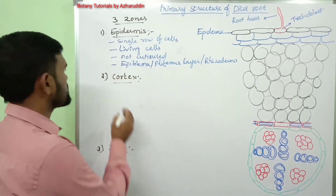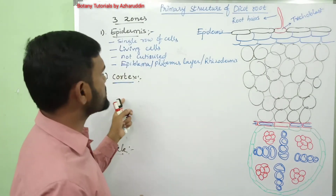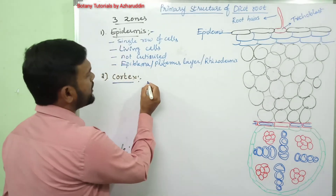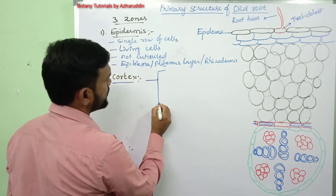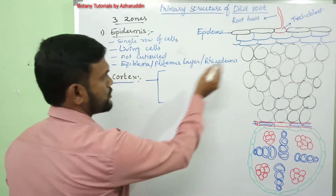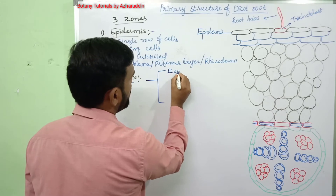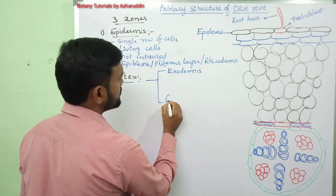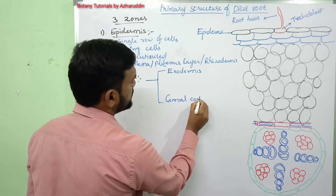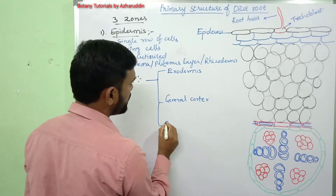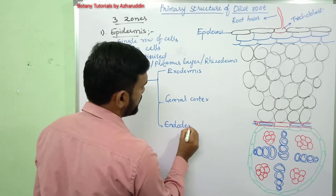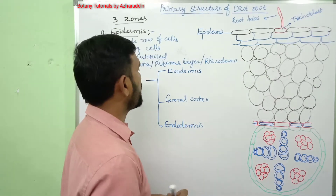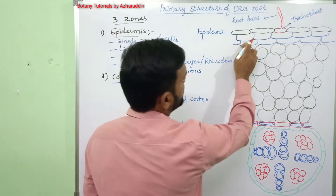Coming to the second zone — cortex. Cortex is the next zone present below the epidermis. This cortex is again differentiated into three zones: first one is exodermis, second zone is called general cortex, and third zone is called endodermis.